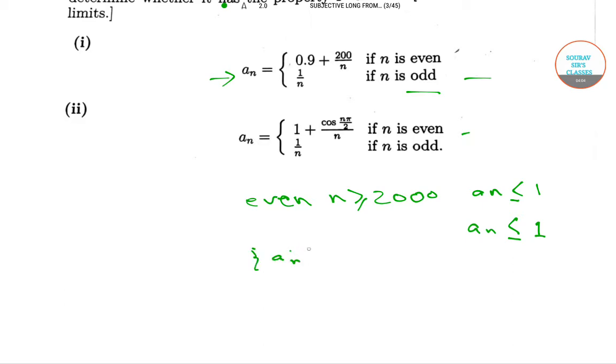Here, our A_N is a decreasing sequence, and A_2000 is equal to 0.9 plus 200 divided by 2000, which equals 1. Therefore, our A_N satisfies the property P.